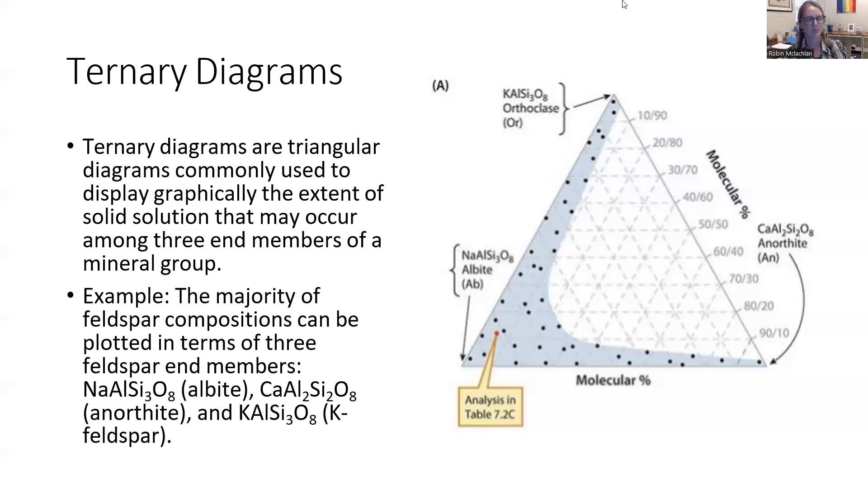You're just never going to find a mixture of anorthite and orthoclase together. That doesn't naturally happen.